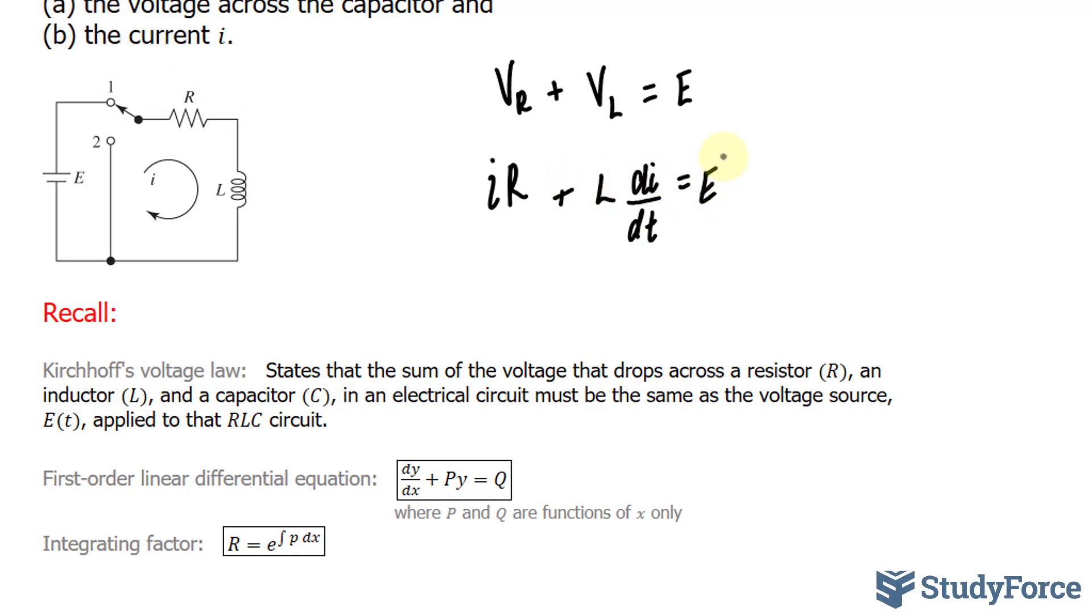Now if I divide all of these terms by the letter L, I get the following. Dividing this term by L gives me the following, dividing this term by L cancels out this L, and dividing E by L gives me E over L. And if I rearrange this where I put dI over dt as the first term, I end up with dI/dt plus R/L times I is equal to E/L.